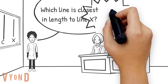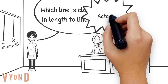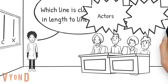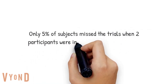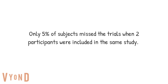Asch found that when actors answer different incorrect answers — for example, one answered A and the other answered C — or when you add two participants instead of one, the odds of conforming or purposefully answering the wrong answer to go along with the group decrease significantly. In fact, only five percent of subjects missed the trials when two participants were included in the same group. So when you have a buddy, it's a lot easier to resist conforming to a wrong answer to go along with the group.